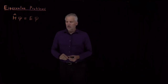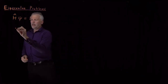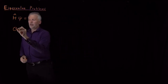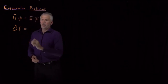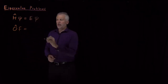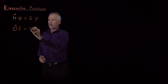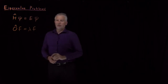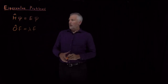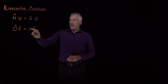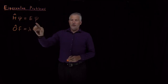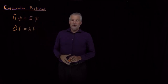In general, an eigenvalue problem is any problem for which we have some operator that, when it acts on a function, gives back the same exact function times some constant. If the operator is the Hamiltonian, the constant is the energy, and the functions are wave functions, then what we have is the Schrödinger equation.